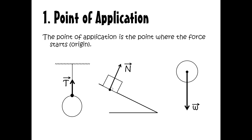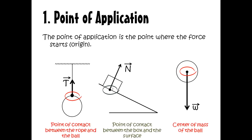We're going to classify the forces as contact forces or forces acting from distance. The contact forces — such as the force exerted by the spring or the rope on the ball — are called the tension force. The tension starts from the point of contact between the rope and the ball, while the normal force also starts from the point of contact. The force acting from distance, like the weight or gravitational force, acts without physical contact and starts from the center of the ball or the center of gravity.